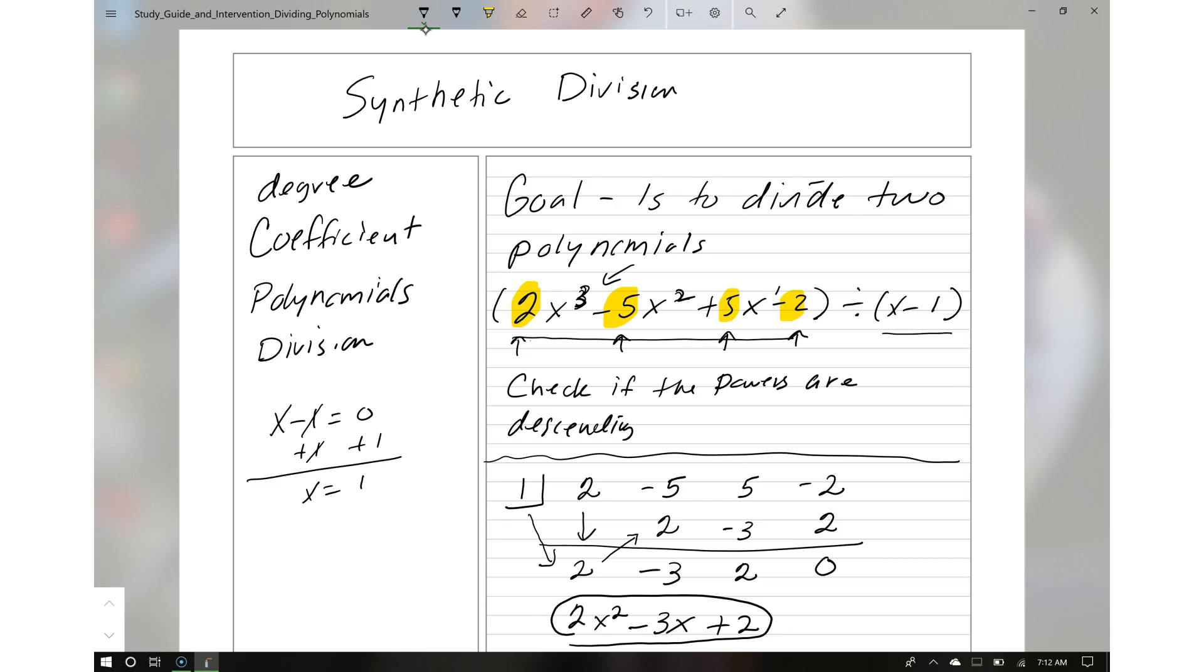Now you notice that our remainder, this is considered to be the remainder. The remainder is 0. What's another fact is that x minus 1 will be a factor of this polynomial. So that's another keyword: factor.